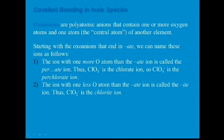The ion with one fewer oxygen atom than the '-ate' ion is named using the '-ite' suffix. So chlorate, ClO3 negative, loses one oxygen atom to become ClO2 negative, which is called chlorite ion.